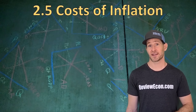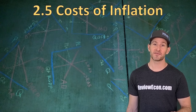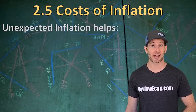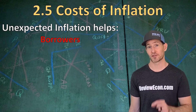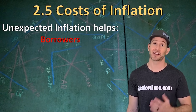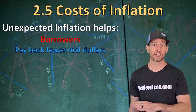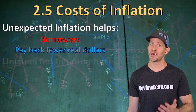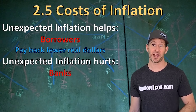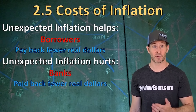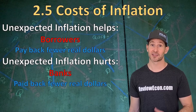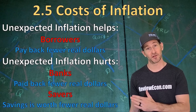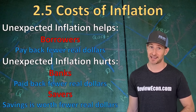Inflation doesn't impact everybody equally. The people who are helped by inflation are actually borrowers — people in debt will pay back fewer real dollars when inflation is higher than expected. On the other hand, unexpected inflation will hurt banks because they are paid back fewer real dollars. Savers are also hurt because the money they've saved is worth fewer real dollars over time.